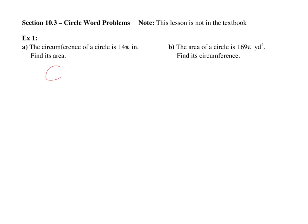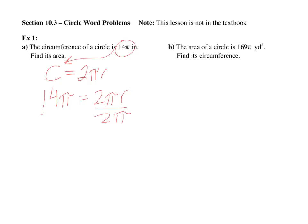The circumference formula is — circumference equals 2 pi r. They give us a circumference, so let's plug that in. And then we divide by 2 pi. R equals 7.